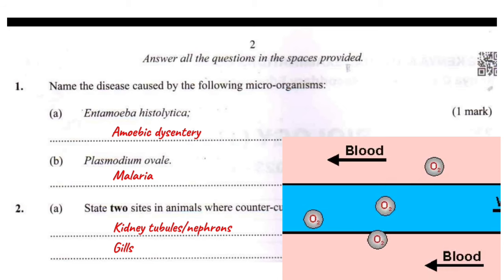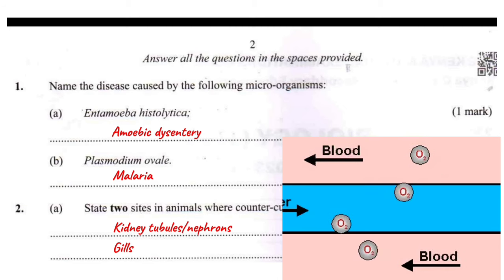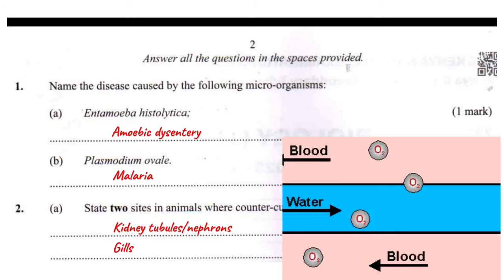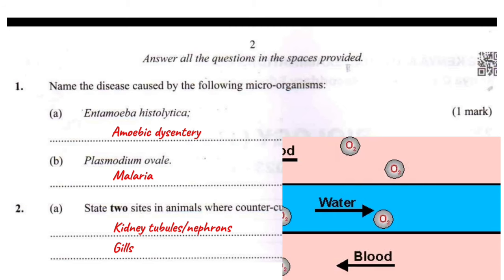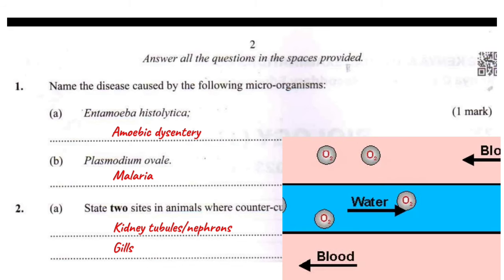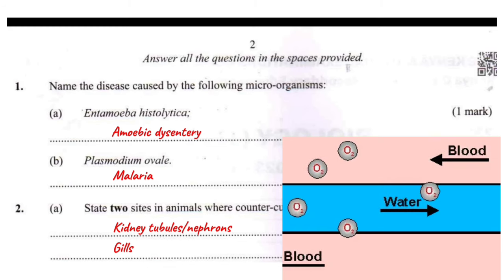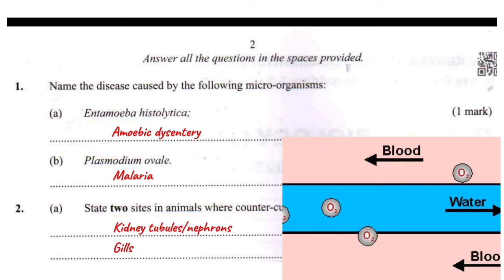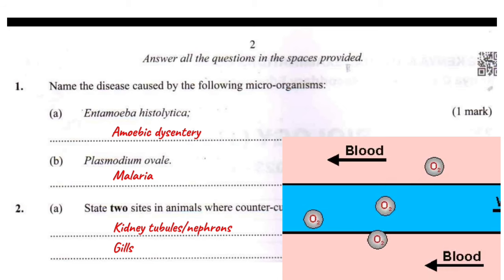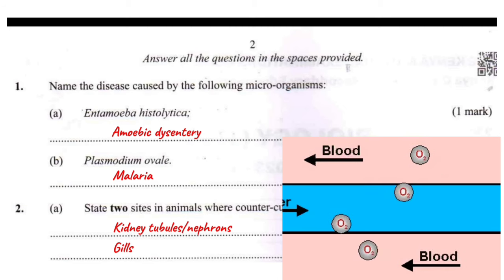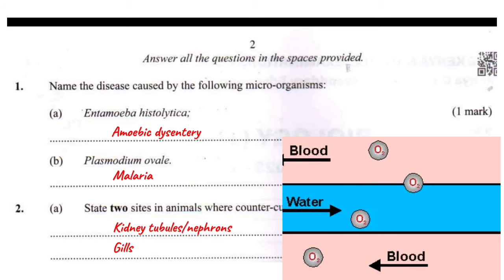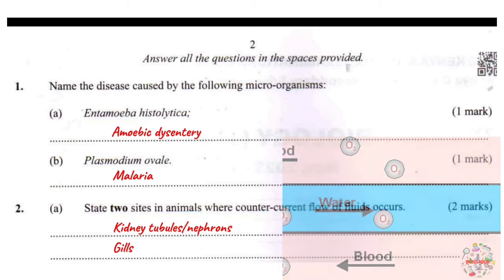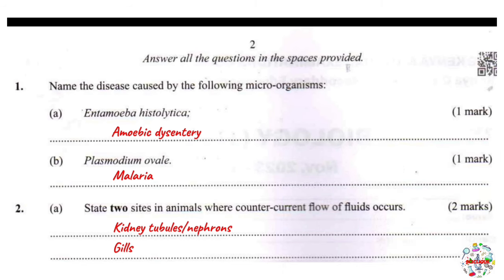This arrangement maximizes the concentration gradient of oxygen between the water and the blood, facilitating efficient oxygen absorption and removal of carbon dioxide. By maintaining countercurrent flow, the fish can extract maximum oxygen from the water and effectively remove carbon dioxide, which is taken up by the water and removed from the fish's body.